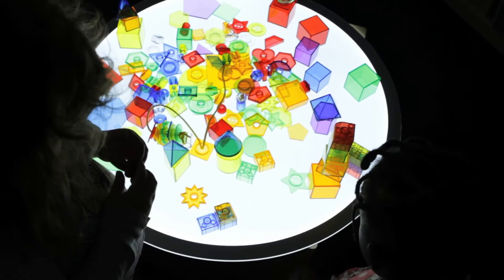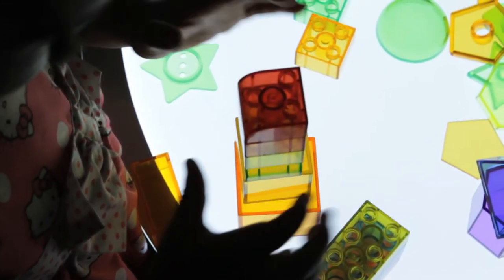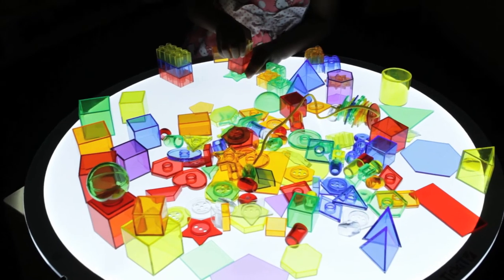Round light panels encourage children to gather around them when working collaboratively, discussing what they see.